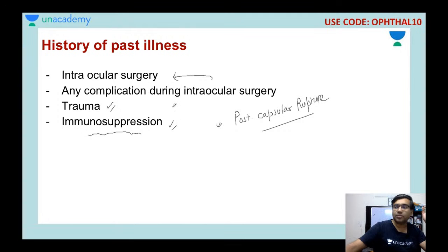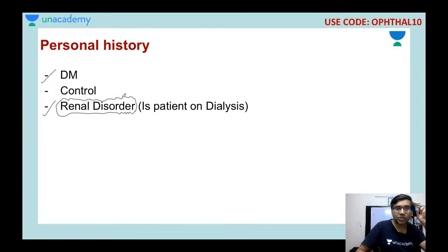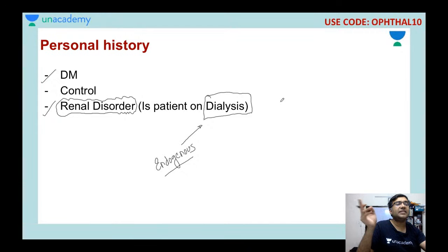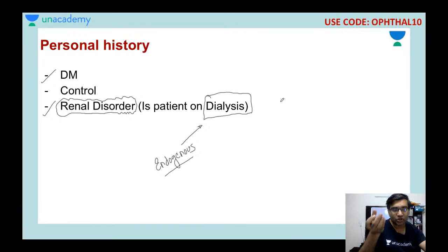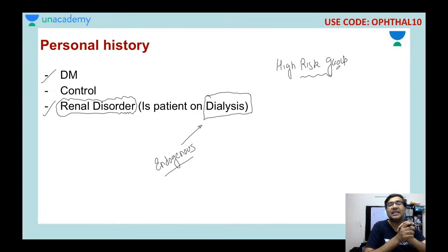In personal history, the most important items are diabetes and sugar control. Also very important: if the patient has a renal disorder or is on dialysis, a dialysis patient is at risk for endogenous endophthalmitis. There are two types of endophthalmitis — endogenous, where the infection source is inside the body, and exogenous, where trauma or intraocular surgery introduces the pathogen into the eye. HIV patients, being immunosuppressed, are also more vulnerable to endophthalmitis.